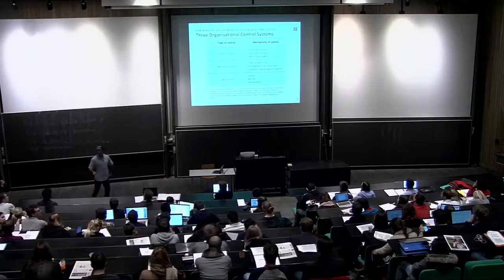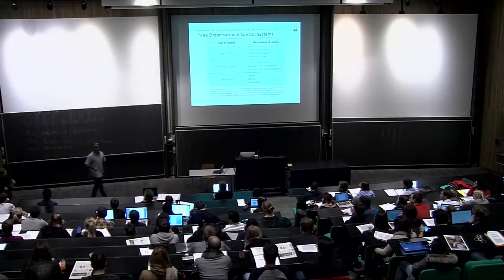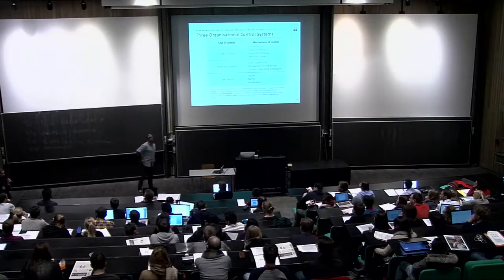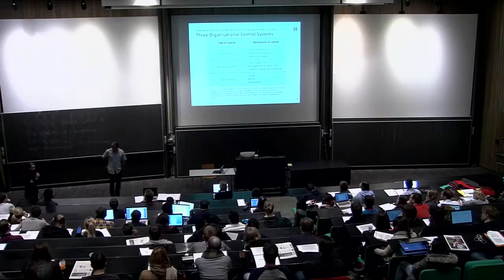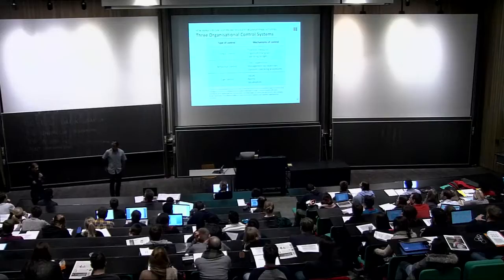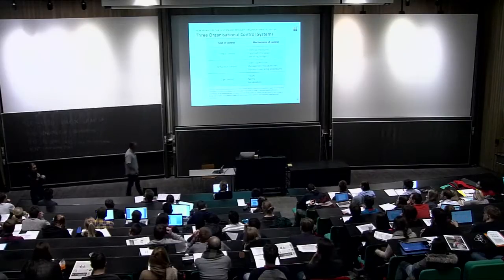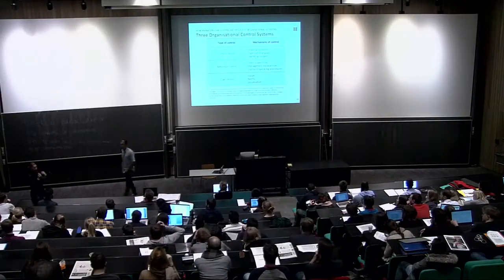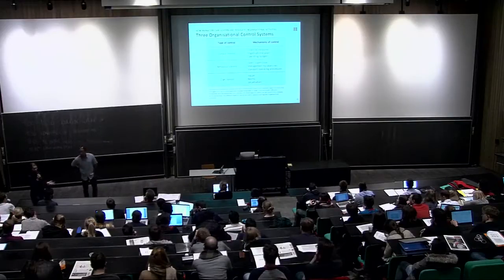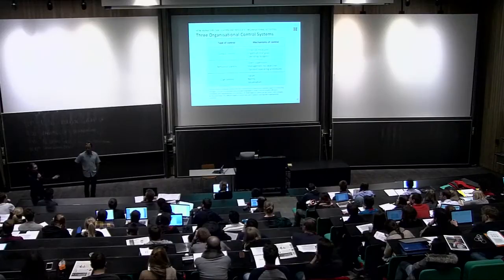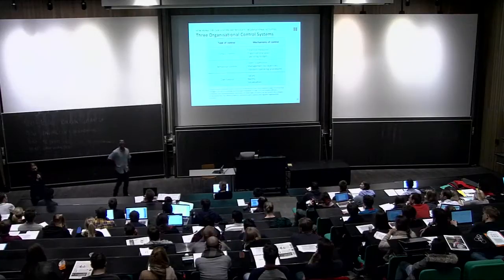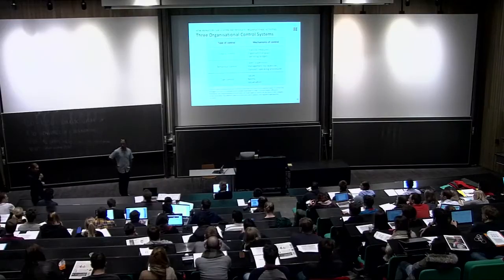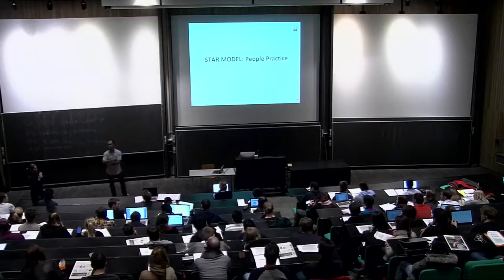Management by objectives (MBO) is defined by how objectives are set — normally you define the objectives together with your employees. For example, at a university we would every year set goals for the coming year: how many publications, how much money. Then we're controlled by output — in the yearly report we state whether we achieved our goals. MBO means we try to set objectives for the year together with our manager, and that will actually influence behavior.